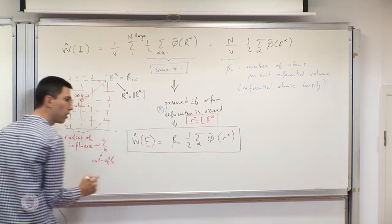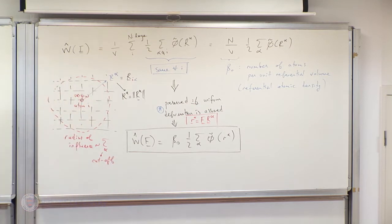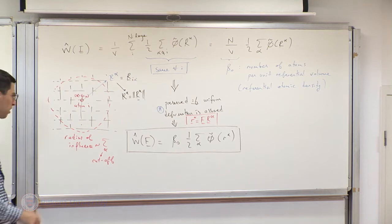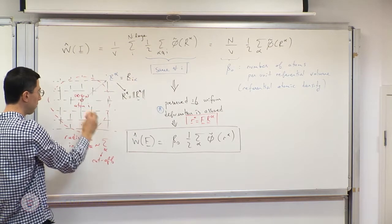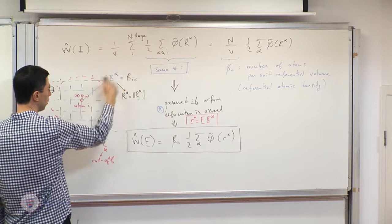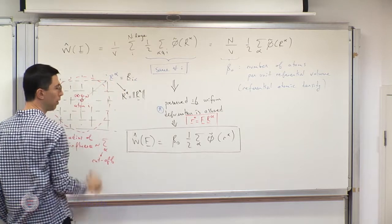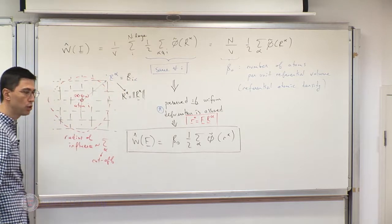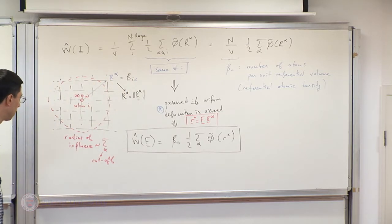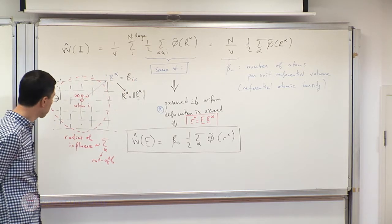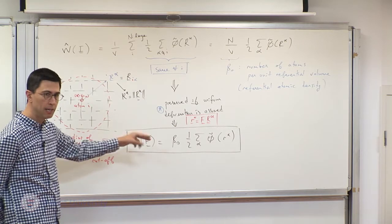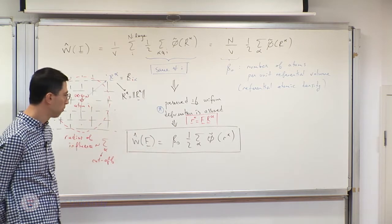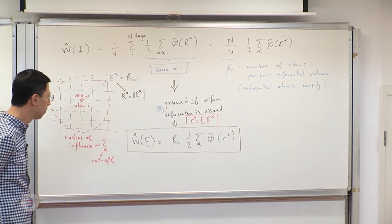At some point you employ a cutoff, and that cutoff is actually not too far away — it extends only to a very short distance in practice. So that sum can be calculated quite rapidly.